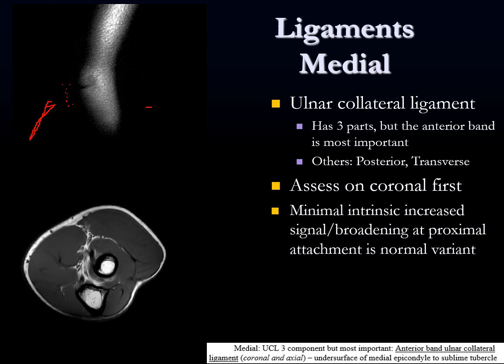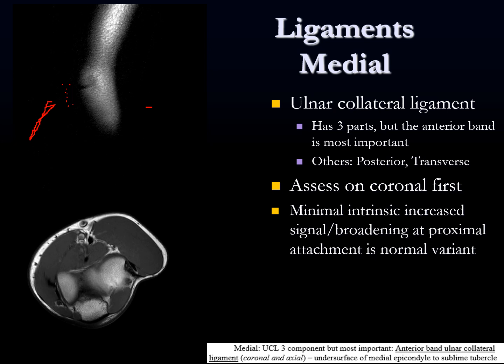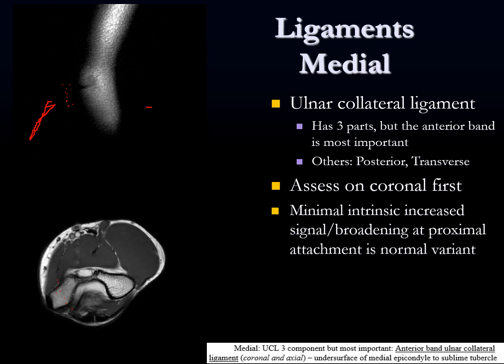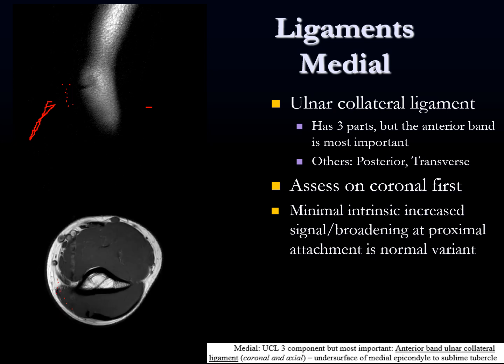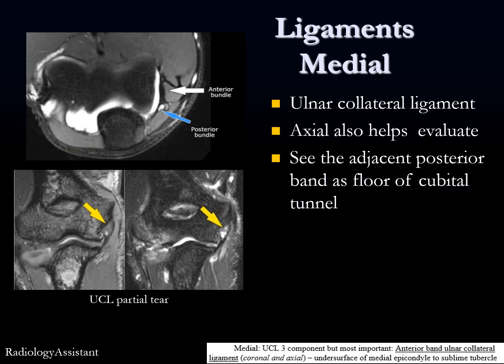Let's follow the UCL on our coronal images coming from posterior to anterior, finding it as it courses from the undersurface of the medial epicondyle to the sublime tubercle. This is a nice normal sublime tubercle attachment of the anterior band of the UCL, coming up through its mid-substance and attaching at the undersurface of the medial epicondyle with a little broadened signal — but normal. On axial, a good landmark is the cubital tunnel — the floor is the posterior band of the UCL, and anteriorly is the anterior band.